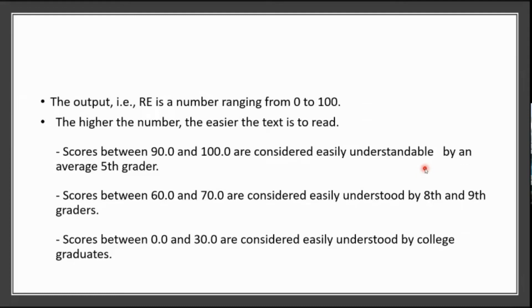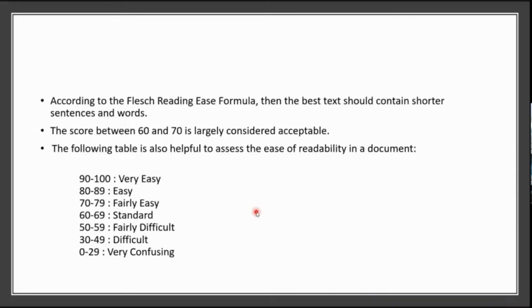The score will be higher towards 100 when the number of syllables is less and words per sentence are fewer — that means short sentences with fewer syllables. Easy to read also means easy to understand; that is the essence of readability. Scores between 90 to 100 are considered easily understandable by an average fifth grader. Scores of 60 to 70 correspond to 8th to 9th grade, and 0 to 30 are easily understood by college graduates. Another way to interpret: 90–100 is very easy, 80–89 easy, 70–79 fairly easy, 60–69 standard, 50–59 fairly difficult, and 0–49 difficult.